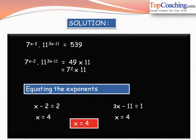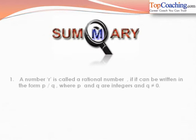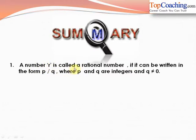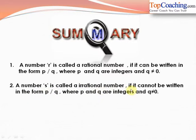That was the end of our chapter on number systems. In summary: a number r is called a rational number if it can be written in the form p by q, where p and q are integers and q is not equal to 0. A number s is called an irrational number if it cannot be expressed in the form p by q where p and q are integers and q is not equal to 0.